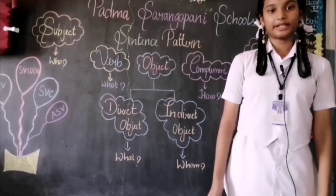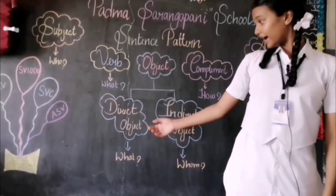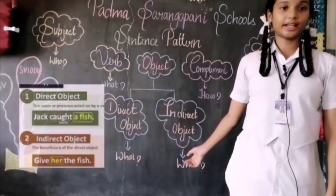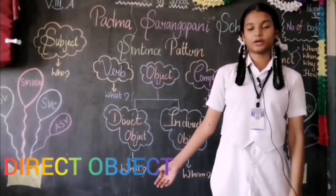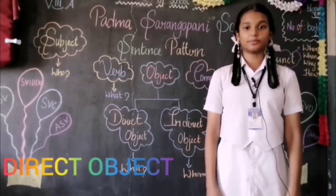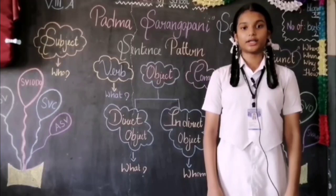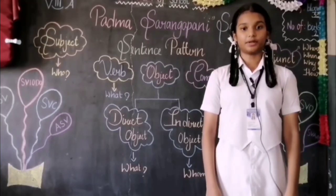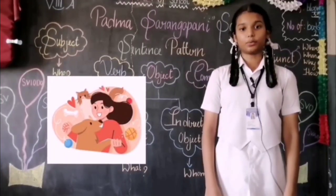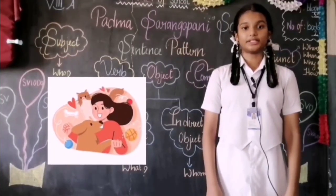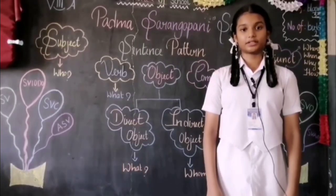Object can be classified into two types: direct object and indirect object. Direct object answers the question WHAT after a verb. Example: I like animals. I like what? Animals. Animals is a direct object.